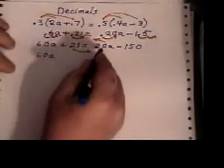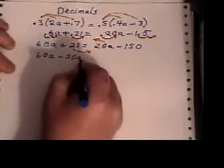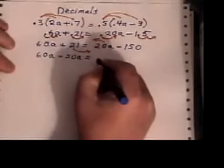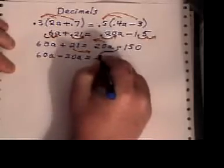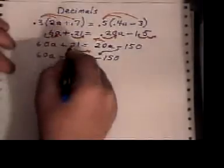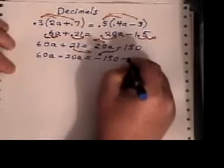60a here, minus 20a because the border guard has changed its sign, minus 150. It has not changed sides, so you keep it with a minus, and plus 21 becomes minus 21.